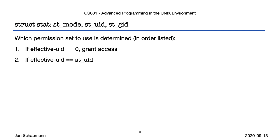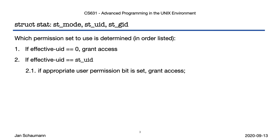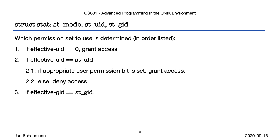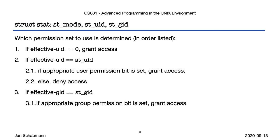Next, if the effective UID matches the st_uid on the file in question, then the system looks at the user permission bits. If those allow access, then you're good. If those do not allow access, then you lose. Of interest here is that this ends the decision-making process — your group membership or the permissions for others are simply not considered. If you are not root and your eUID does not match the st_uid, then we go on and look at the effective group ID. If that matches the st_gid and the group permissions in question are set, you get access. If not, you lose.